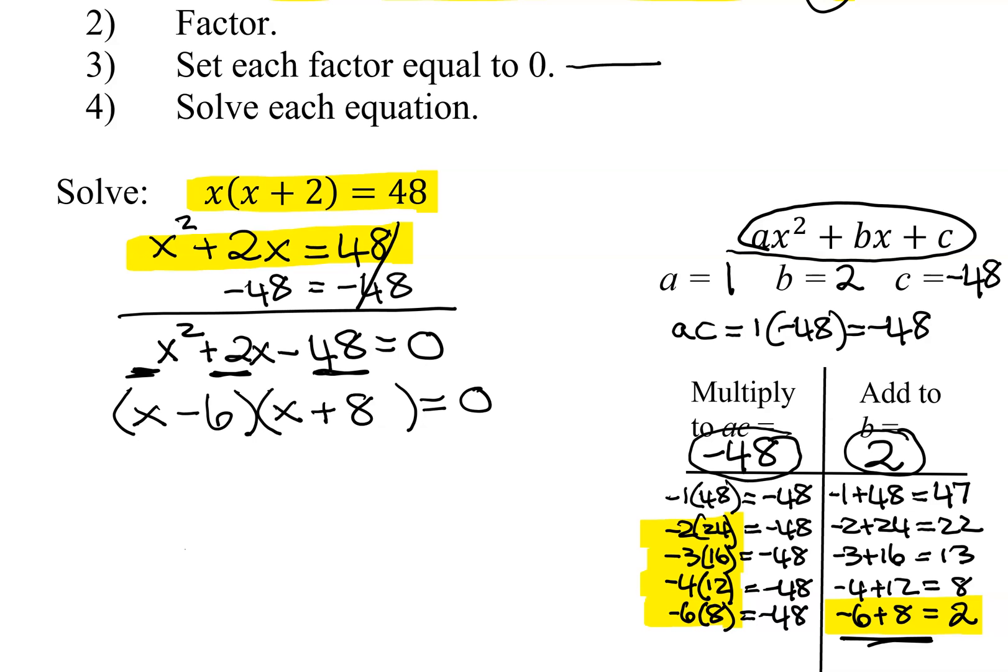And now because I have 0 on one side, two numbers multiplied together equaling 0, you have to set each of them equal to 0.